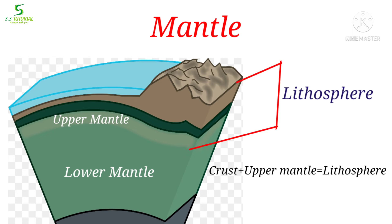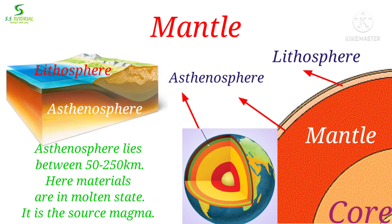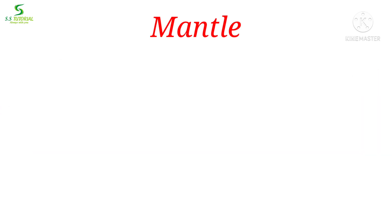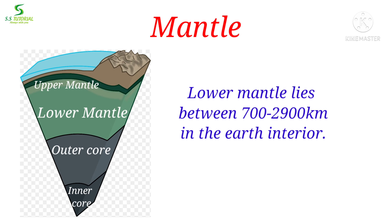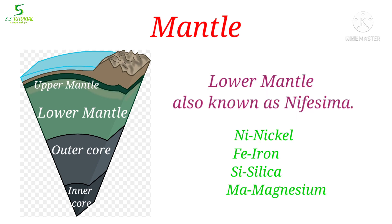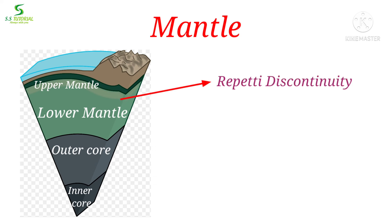The entire earth's crust and upper mantle together are known as the lithosphere. There is also a discontinuity between the earth's crust and upper mantle, known as the Mohorovičić discontinuity. The zone beneath the earth's crust extending almost 50 km to 250 km — much hotter and more fluid — which is the main source of magma as well as volcanic eruption, is known as the asthenosphere. Convection currents generated in the asthenosphere cause plate movement. The lower mantle lies from 700 km to 2,900 km, also known as Nifesima, as it is composed of nickel, iron, silica, and magnesium. Mean density of this layer is 4.5 to 5.5 g per cubic centimetre. The imaginary line separating upper and lower mantle is known as the Repetti discontinuity.